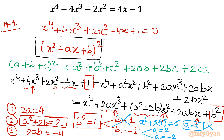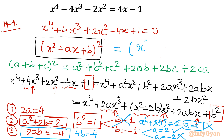Now which value of a will we accept? Using equation 3: if a equals 2, then 2(2)(−1) equals −4 — correct! If a equals minus 2, then b comes out to be 2, which is not correct. So we accept a equals 2 and b equals minus 1.